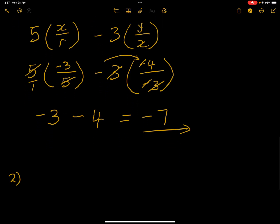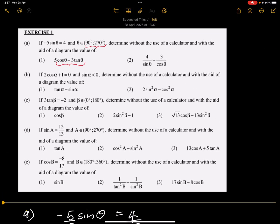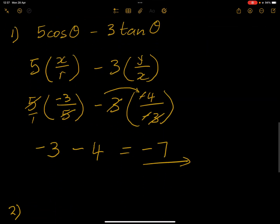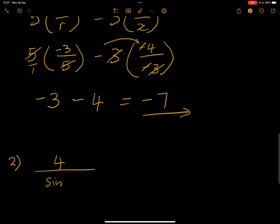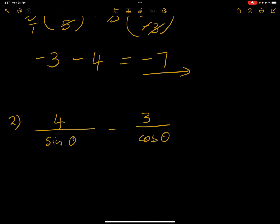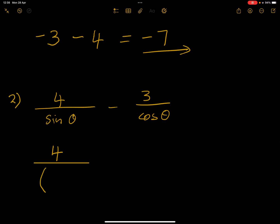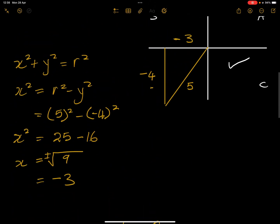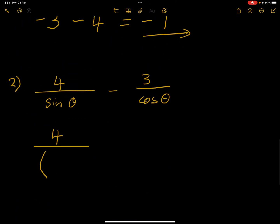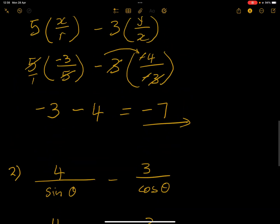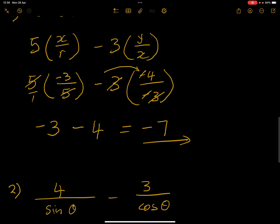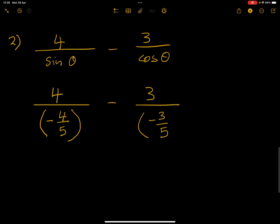Now if we were to look at number 3 of A, they said to us evaluate 4 over sine theta minus 3 over cos theta. So all we need to do here is just to work with just the fractions. Remember that sine is Y over R, so this would be divided by our Y value, that's negative 4, R is 5, so that's negative 4 over 5, minus 3 into cos is X over R, so that's negative 3 over 5.